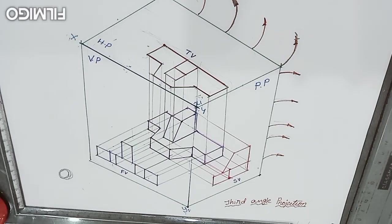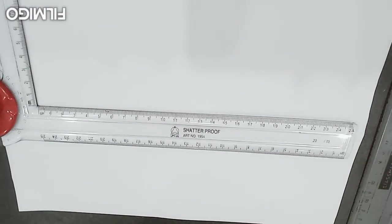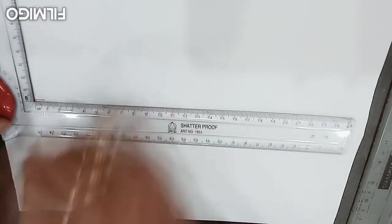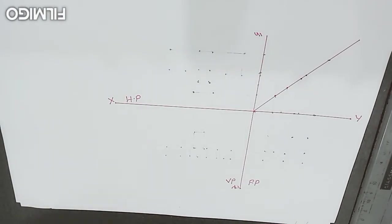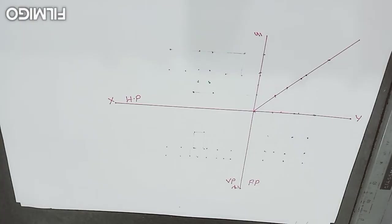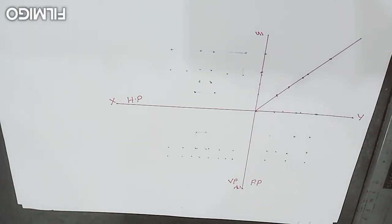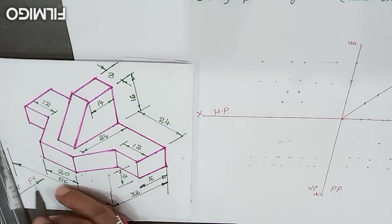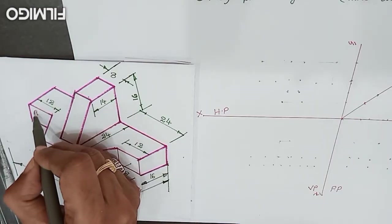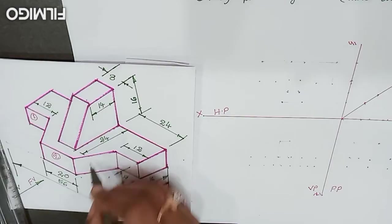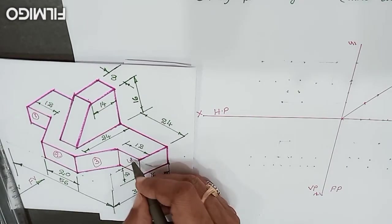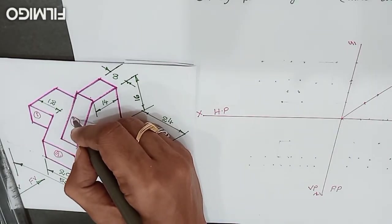Now we will draw the projections based on real measurements. First, draw the XY line as well as the X1Y1 line, and add a 45-degree inclination line. We will draw the front view first. The direction of the arrow indicates the front view. The observer is able to see five parts in the front view: first, second, third, fourth, and fifth part.